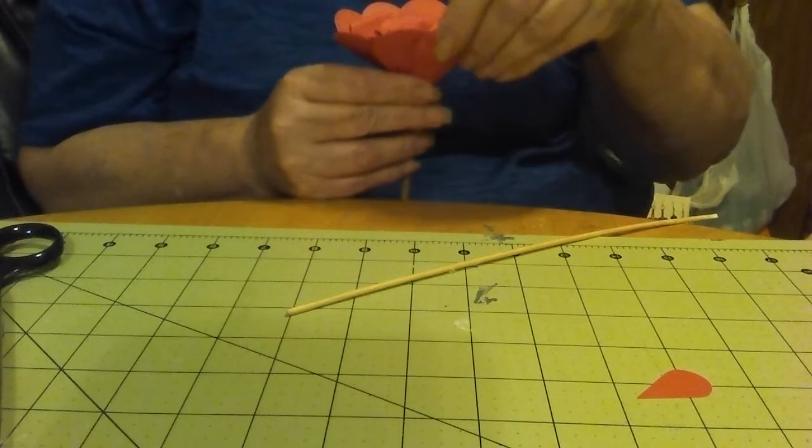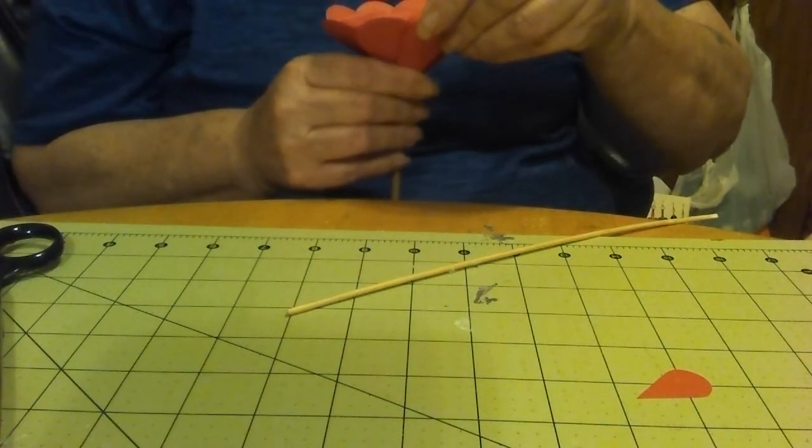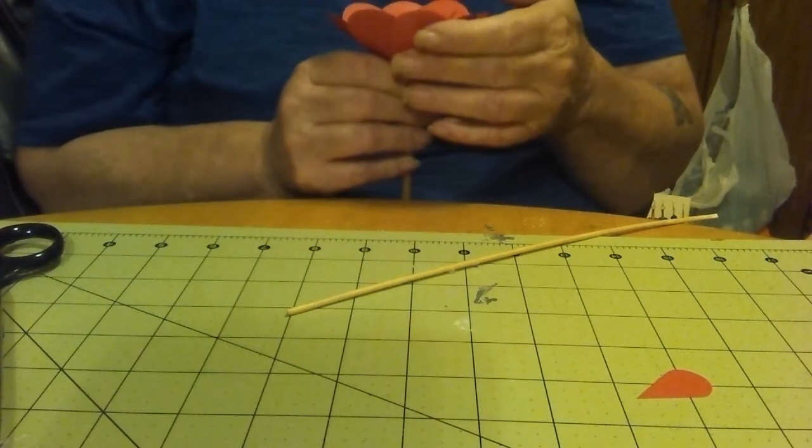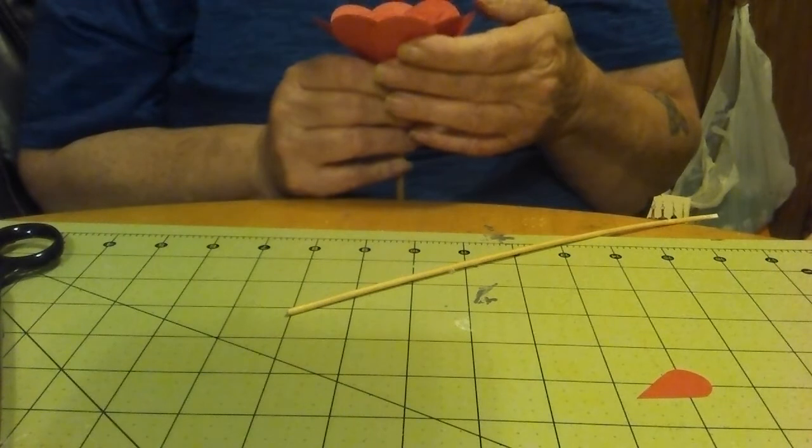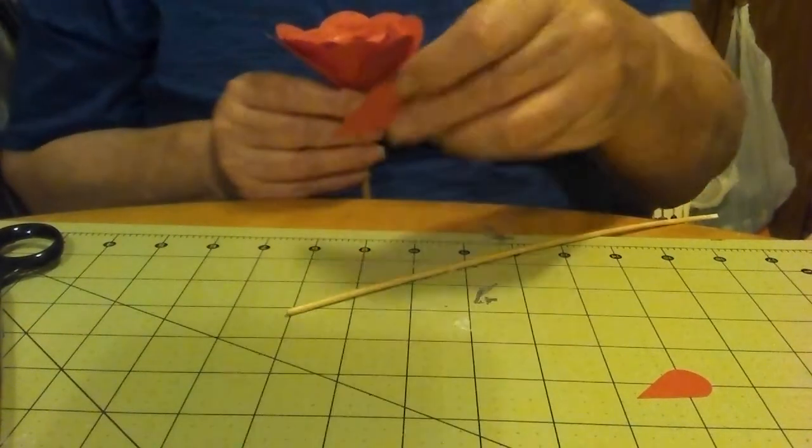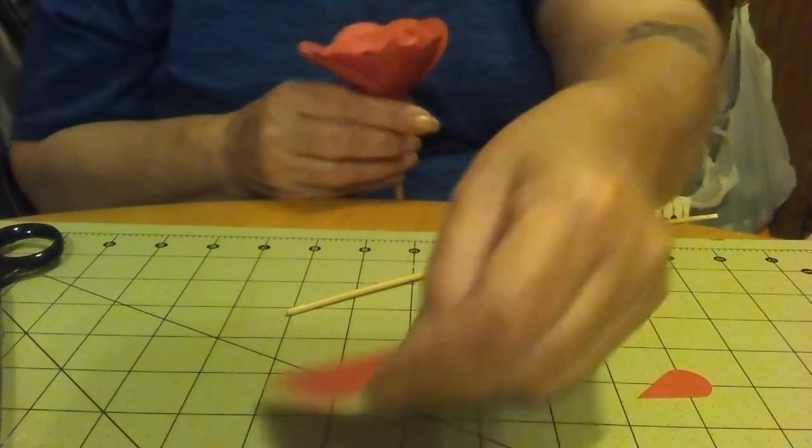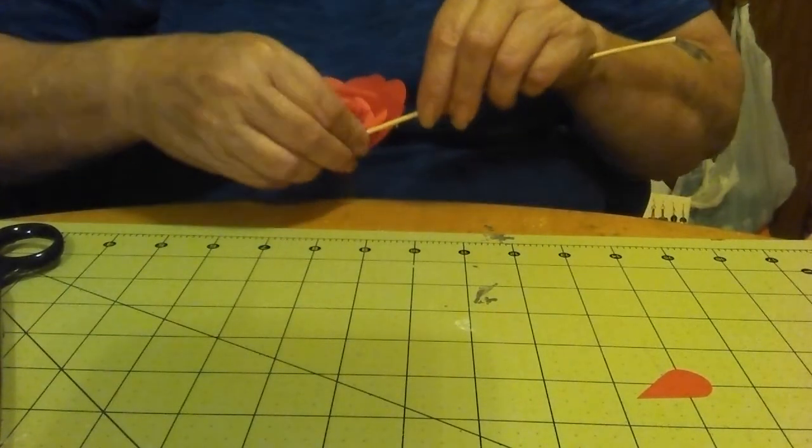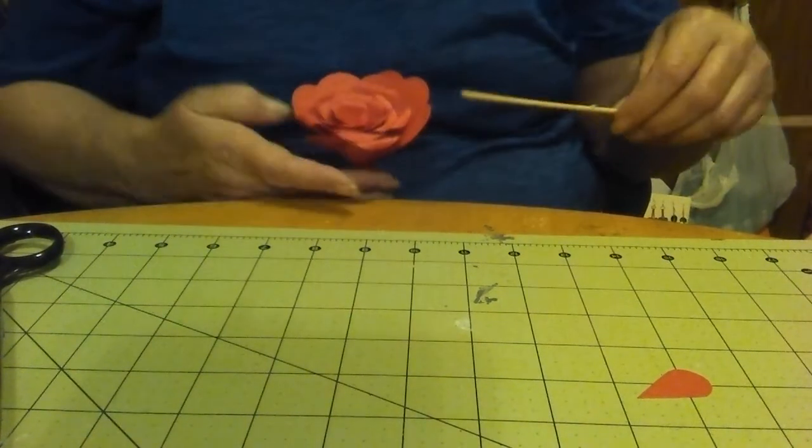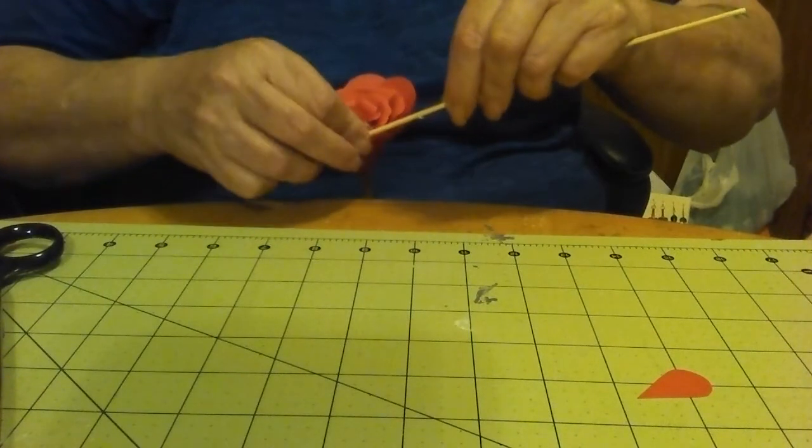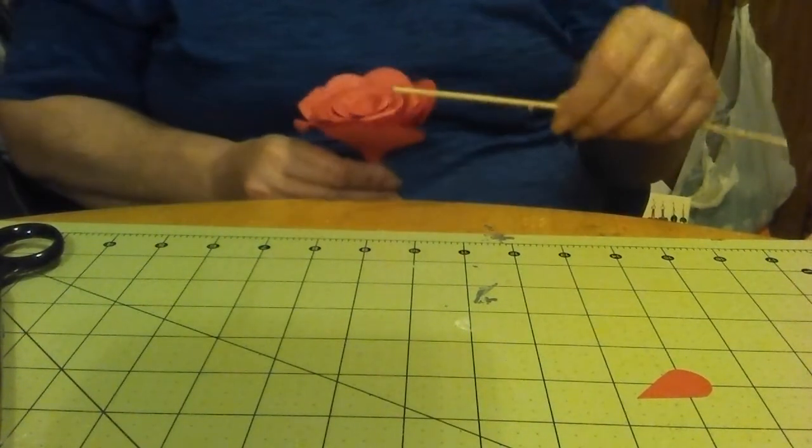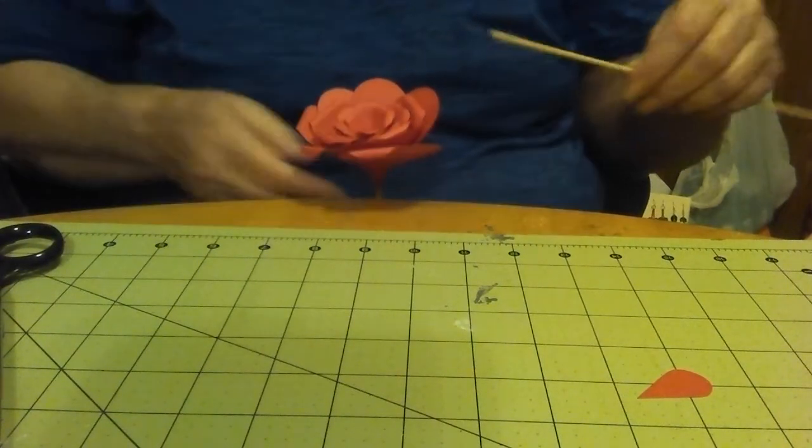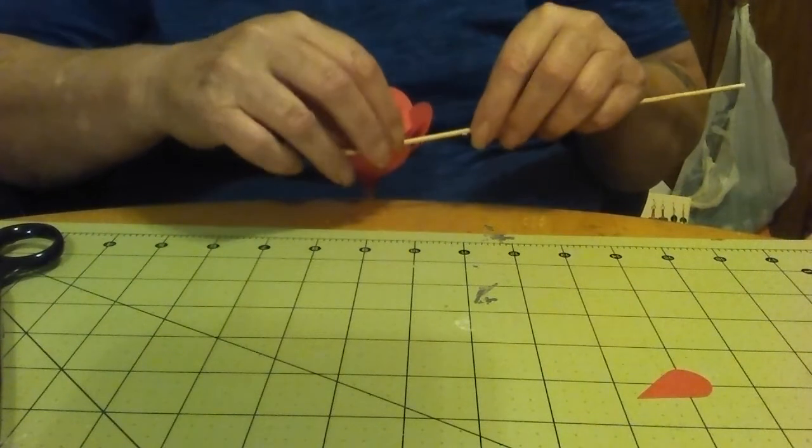Let me get all the petals down. If this looks a little odd shape, once you get all your petals done you can go on behind it, glue it down, and it'll look just fine.